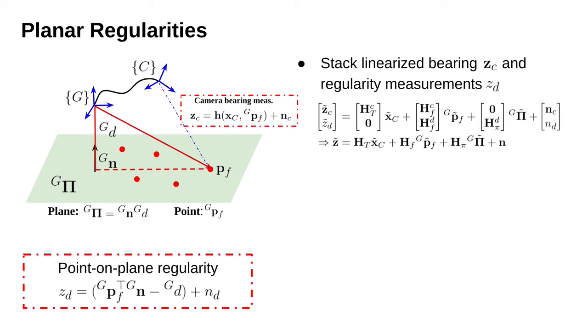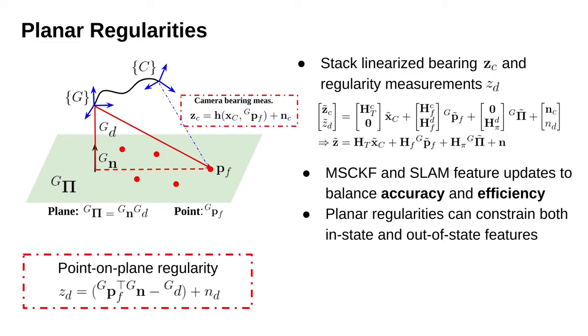We can formulate linearized regularity measurements by stacking camera bearing measurement and the point-on-plane constraint, where we will resolve a linearized measurement equation with respect to the navigation state Xc, point feature state PF, and plane feature state pi. H are the measurement Jacobians with respect to these states. To balance efficiency and accuracy, we also process features as SLAM features and MSCKF features for both points and planes. If features are tracked longer than the sliding window, we insert them into the state vector and perform EKF update to improve accuracy. Short-tracked features thus perform MSCKF update to ensure efficiency. As such, whether the features are in the state or not, the regularity constraint can be efficiently added to the system.